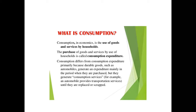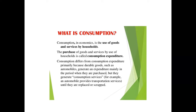How are they different? Consumption differs from consumption expenditure primarily because durable goods such as automobiles generate an expenditure mainly in the period when they are purchased, but they generate consumption services — for example, an automobile provides transportation services until it is replaced or scrapped. So if it is purchased today, it generates consumption expenditure, but it can be used over a longer period of time. This is how consumption and consumption expenditure are differentiated.